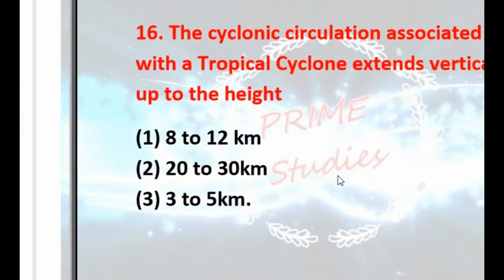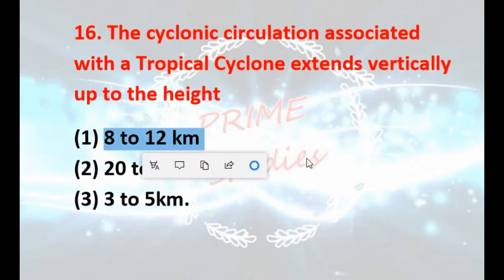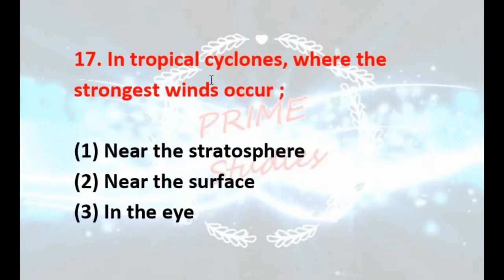The cyclonic circulation associated with a tropical cyclone extends vertically up to what height? The options are 8 to 12 kilometers, or 30 to 12 kilometers. Where are the strongest winds — near the stratosphere, near the surface, or in the eye? Your answer is near the surface.